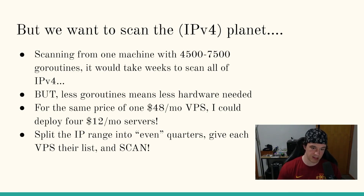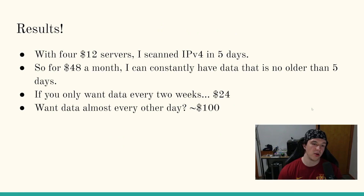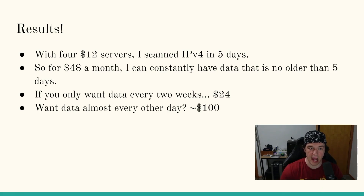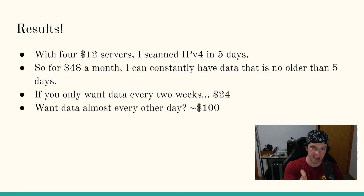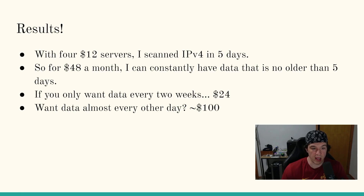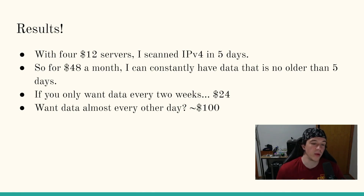What I did with the IP range - all of IPv4 in this case - is I just split it evenly into quarters: four lists with about the same number of IPs in each one. I gave each VPS a list and started scanning. The results were that with four $12 servers, I scanned the IPv4 space in just over five days - five days and three hours. So for $48 a month, I can consistently have certificate data no older than five days. If you only care about data every two weeks, you could use two $12 a month servers at just $24 a month.